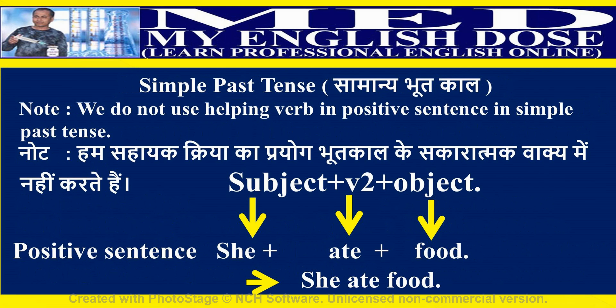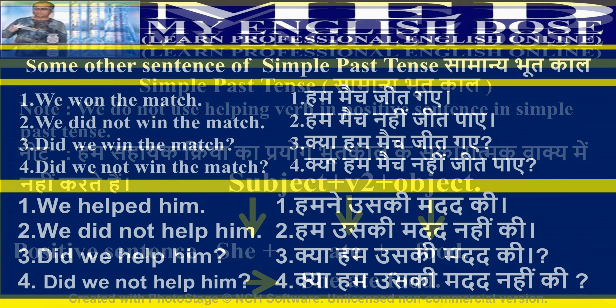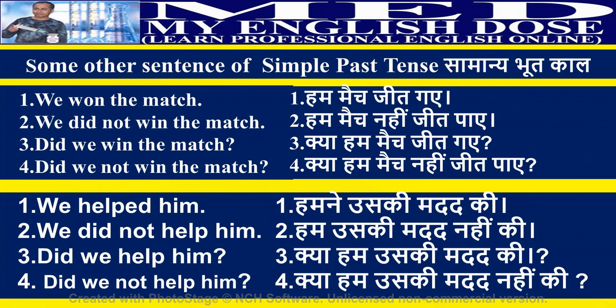Note: we do not use a helping verb in the positive sentence of simple past tense. Here 'he' is the subject, 'ate' is the second form of a verb, and 'food' is the object. Examples: We won the match. We did not win the match. Did we win the match? Did we not win the match? We helped him. We did not help him. Did we help him? Did we not help him?